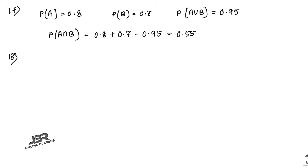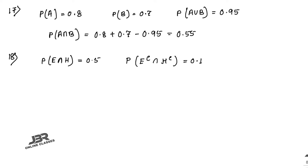Now sum number 18: the probability that the student will pass the final examination in both English and Hindi is 0.5. So let E for English and H for Hindi, so P(E∩H) = 0.5. The probability of passing neither is 0.1 — neither means complement, so P(E' ∩ H') = 0.1. The probability of passing the English examination P(E) = 0.75.